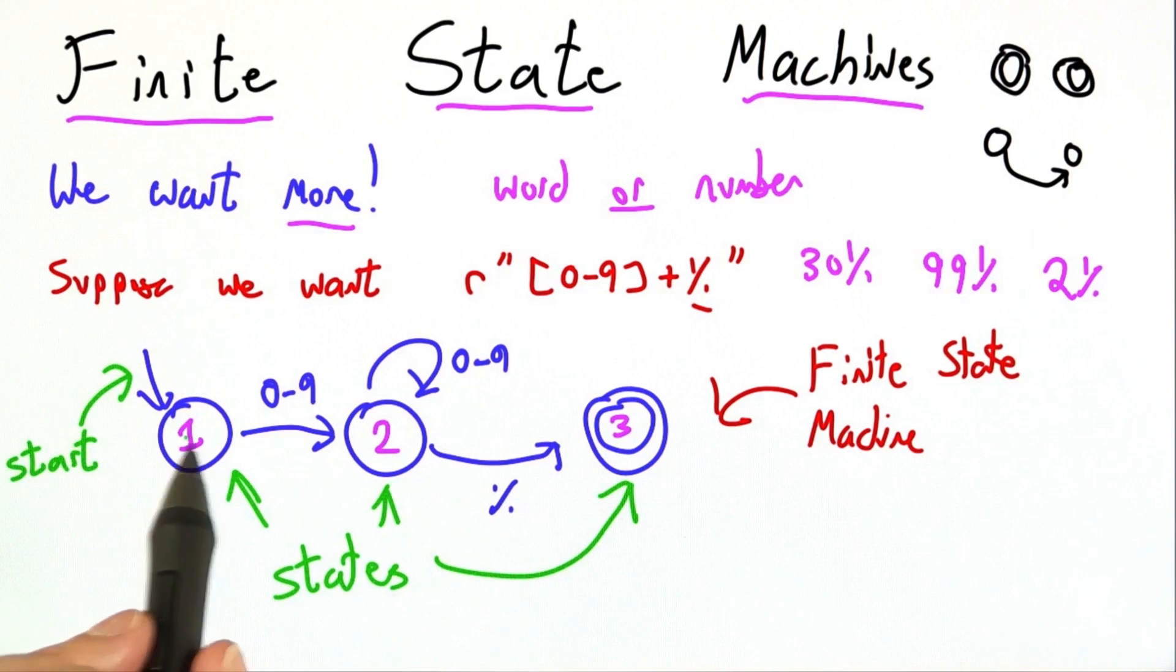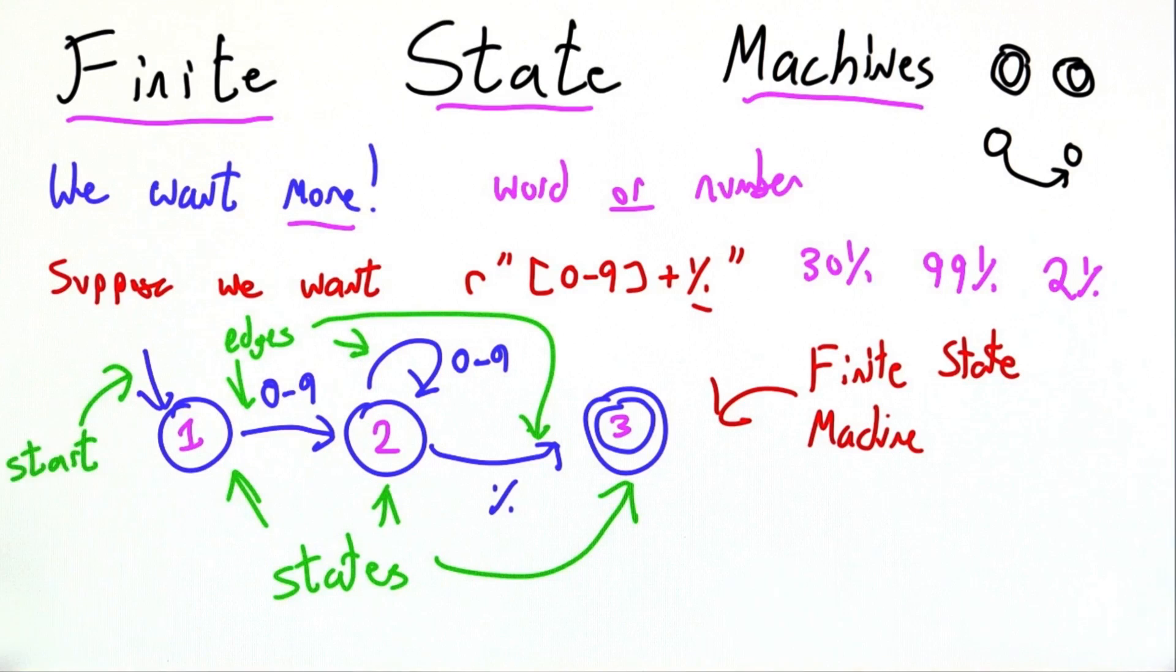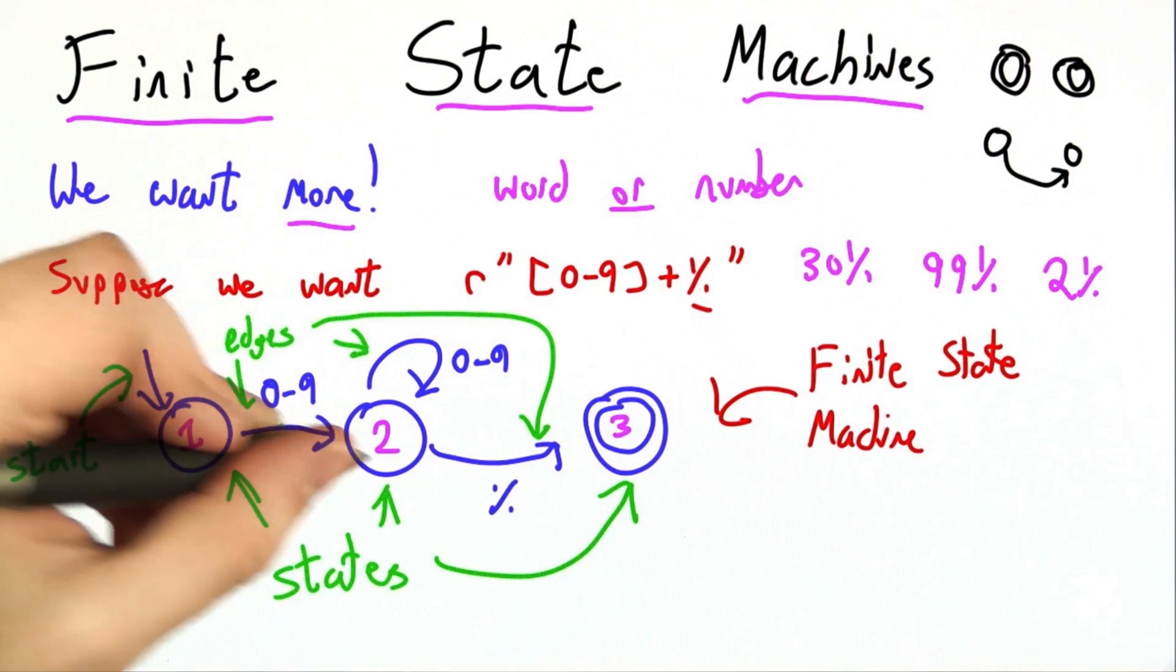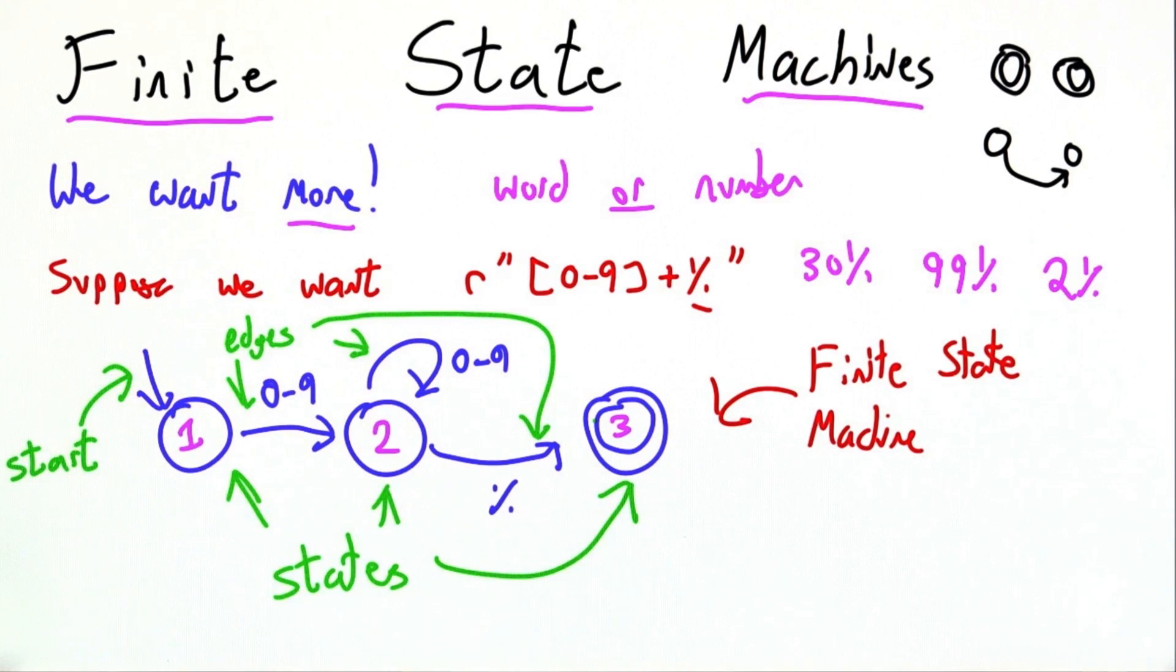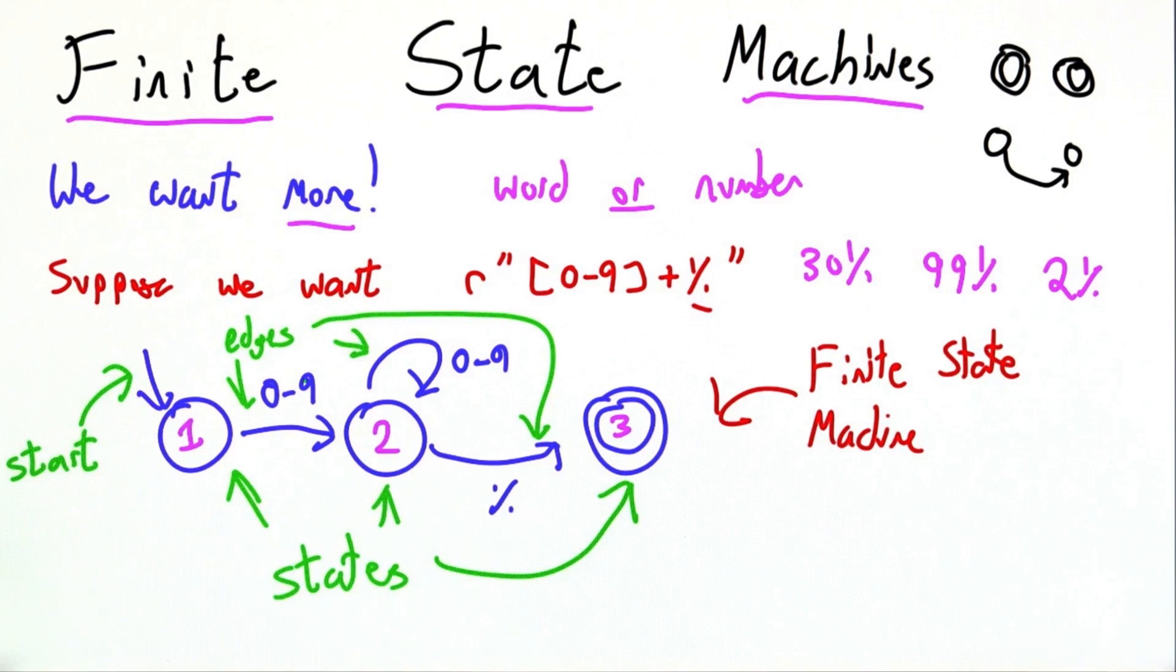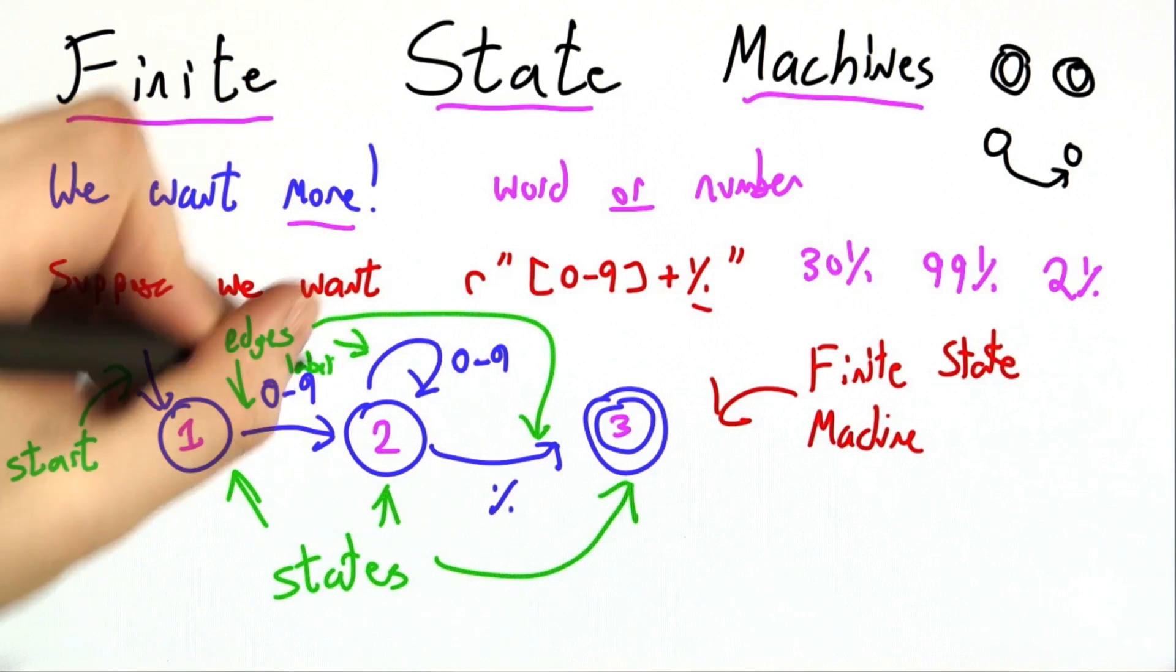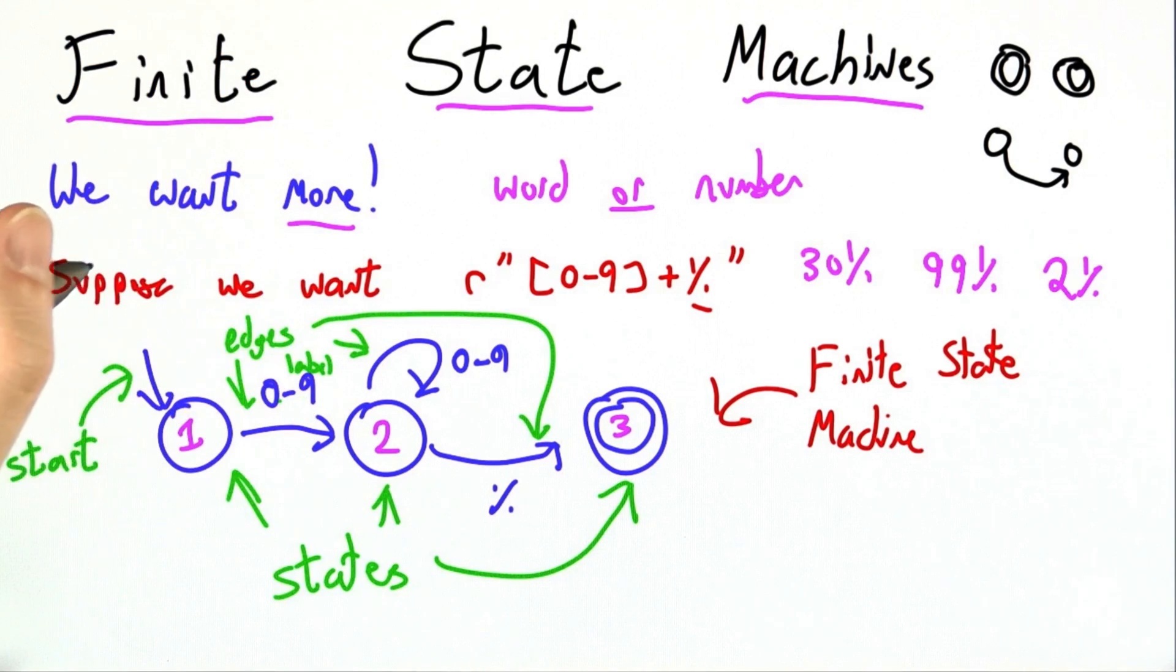I've labeled my states 1, 2, and 3. These other arrows are called edges or transitions. They tell us when to move from one state to another. I start in state 1, and if I see a 0 through 9, I move over to state 2. This 0 through 9 is the label associated with this edge.